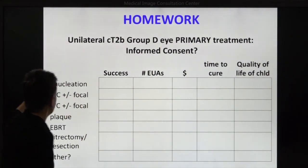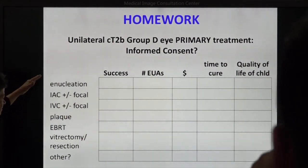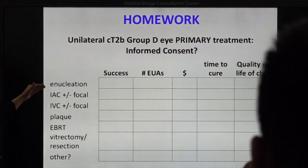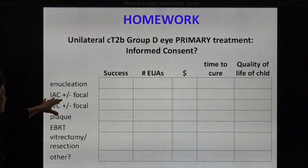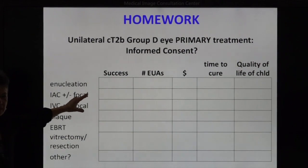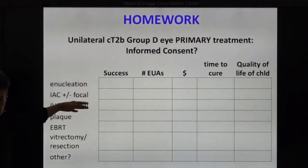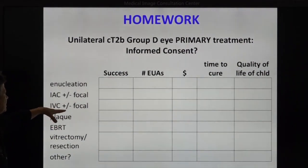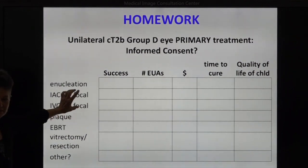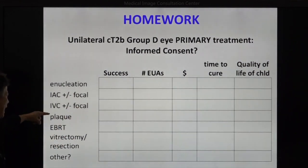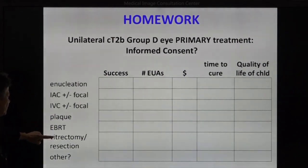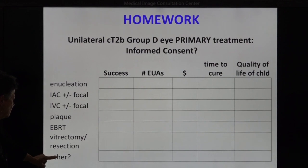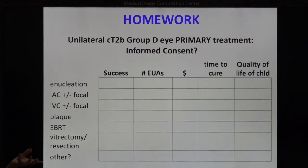I've put up various treatments: enucleation; IAC, usually plus or minus focal, meaning intravitreal, etc.; IVC, same — not standing alone; plaque, which might stand alone or not; external radiation therapy; dentrectomy slash resection; and anything else you think of as a primary first treatment for the child.